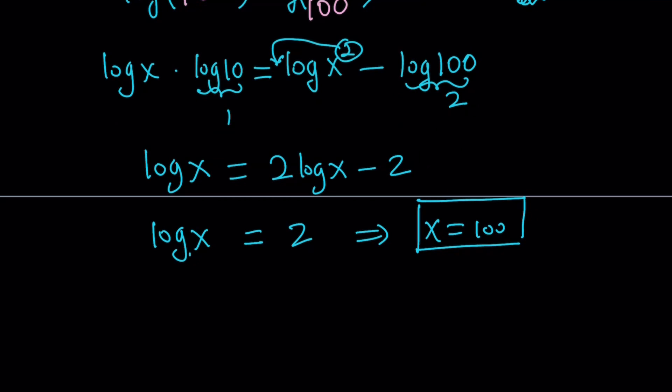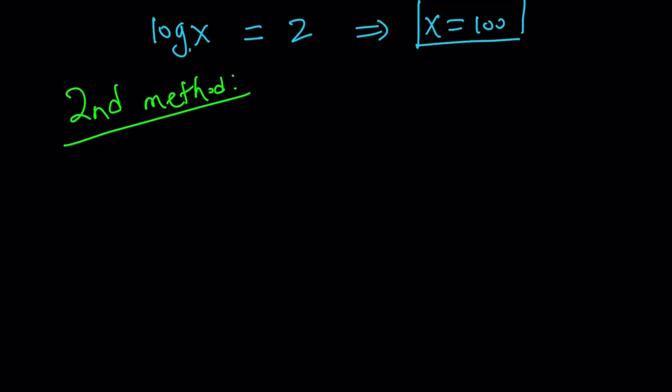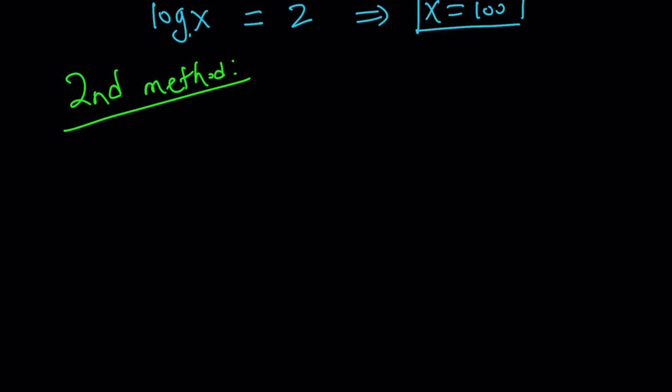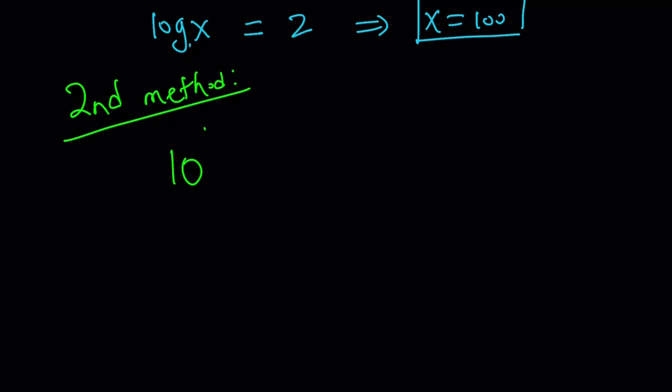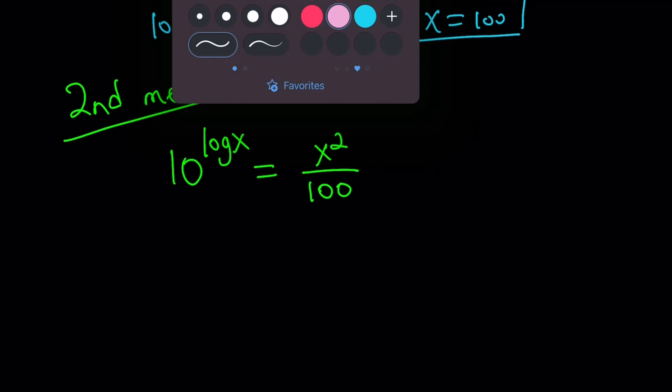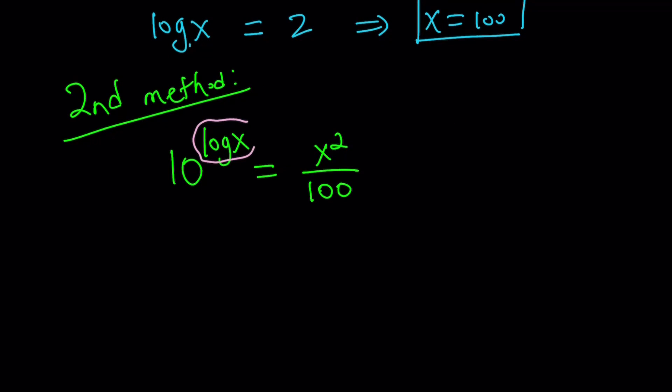The second method might be a little easier if you are familiar with exponents. So let's rewrite the original problem. 10 to the power log x equals x squared divided by 100, and we're going to use substitution. Substitution is helpful, so let's go ahead and call this y, and that means log x equals y, and by using the definition of logs again, base 10, 10 to the power y equals x.